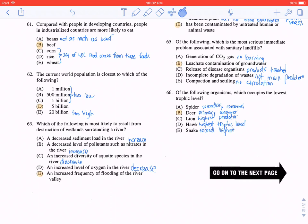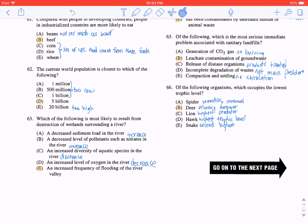Question 66: Of the following organisms, which occupies the lowest trophic level? The lion and the hawk are actually top predators, so they would be at the highest trophic level. The snake is the second highest, and the spider is the secondary consumer. So the lowest trophic level would be deer, B, since it is a primary consumer.